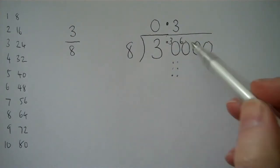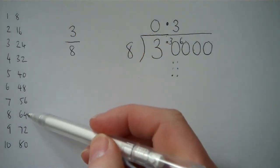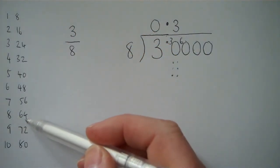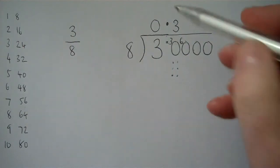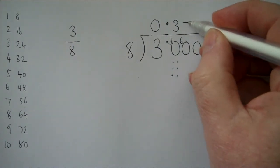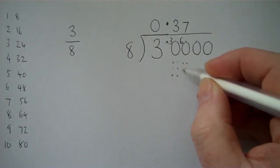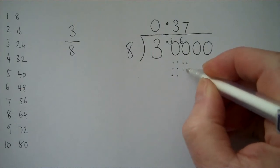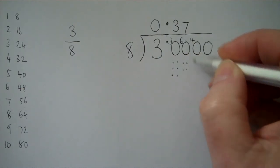How many eights are there in 60? Well let's have a look down here. 8 eights are 64, that's too many. 7 eights are 56, that's the nearest we can get. So that's 4 remainder, carry the 4 onto the next zero.